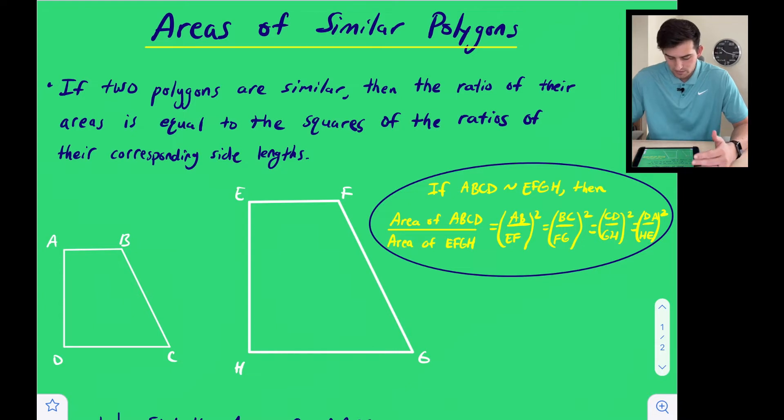So if two polygons are similar, then the ratio of their areas is equal to the squares of the ratios of their corresponding side lengths.